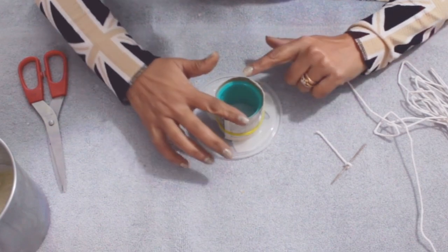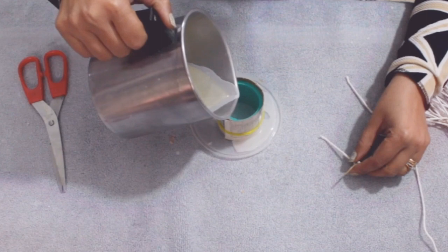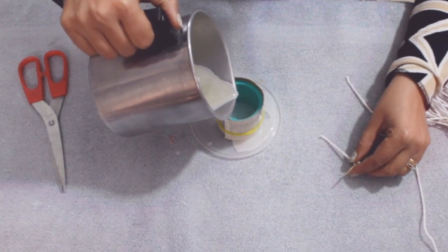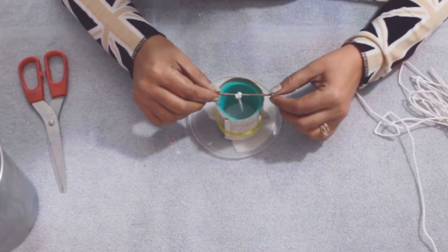This is super easy, so follow the process carefully as I'm showing you here. Now pour a little amount of wax into the mold so we can fix our wick like this.